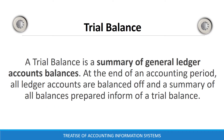The fourth process in the accounting cycle is preparation of trial balance and end of year adjustments. A trial balance is a summary of all general ledger account balances. At the end of an accounting period, all ledger accounts are balanced off, and a summary of all balances is prepared in the form of a trial balance that shows debit balances and credit balances.